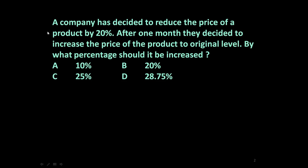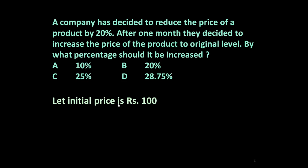The given problem is: a company has decided to reduce the price of a product by 20%. After one month they decided to increase the price back to the original level. By what percentage should it be increased? The options are 10%, 20%, 25%, or 28.75%.